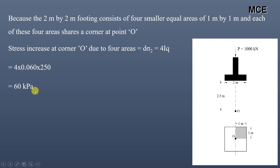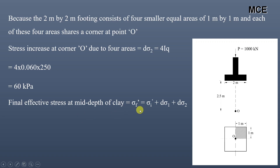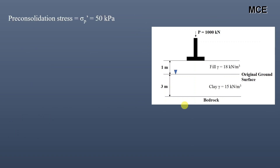The final effective stress at the mid-depth of clay equals the initial effective stress plus the stress increase due to fill plus the stress increase due to the footing: σ'f = 7.8 + 18 + 60 = 85.8 kilopascal. The pre-consolidation stress given in the question is 50 kilopascal. The void ratio is e = w × Gs = 0.4 × 2.7 = 1.08.